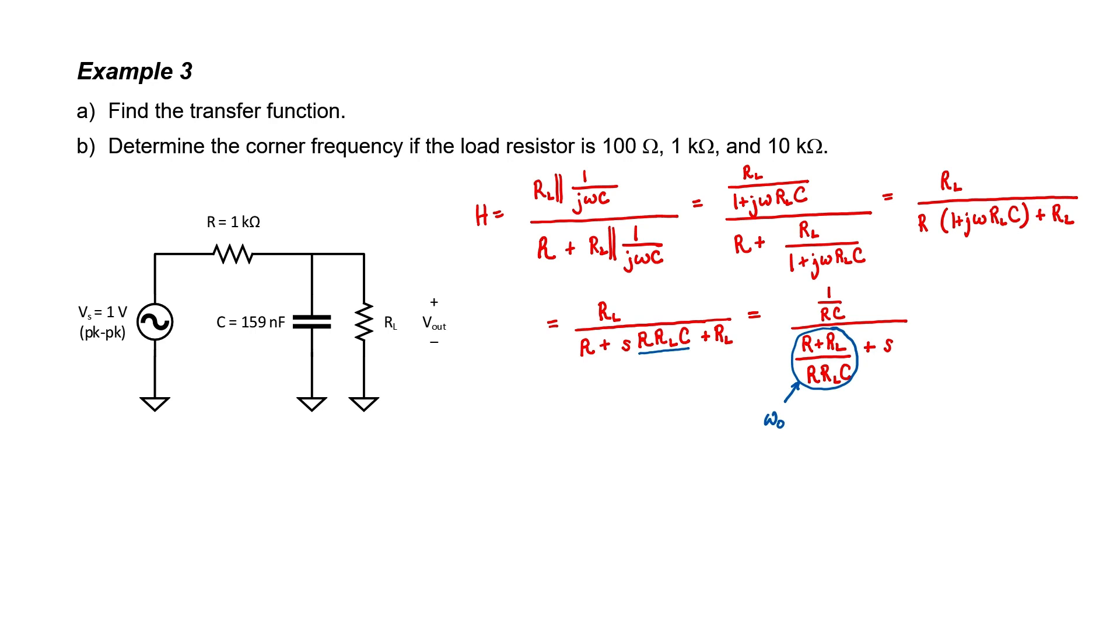As we can see, this is still a one-pole filter, but our formula for the corner frequency is slightly different than it was when we only had one resistor. The presence of the load resistor has altered the position of the pole and consequently altered the corner frequency of the filter.